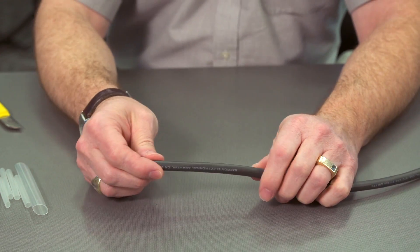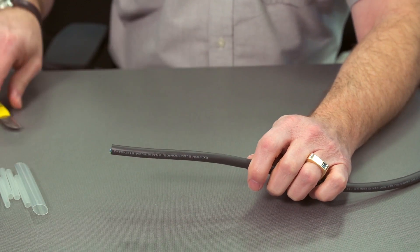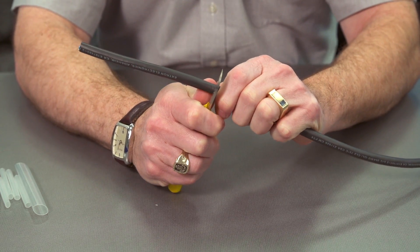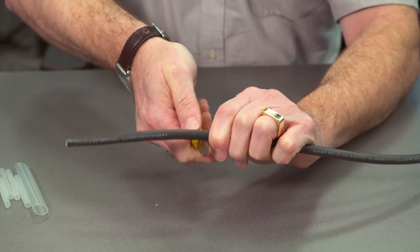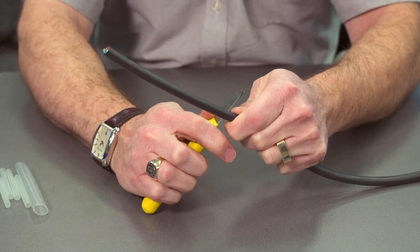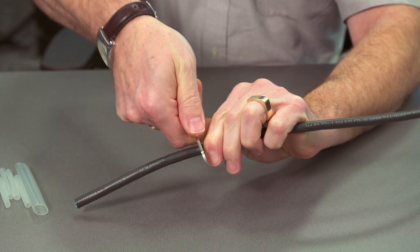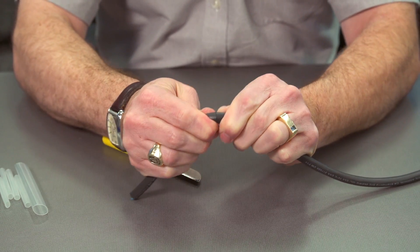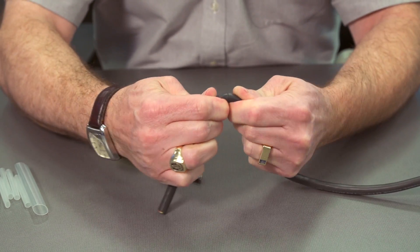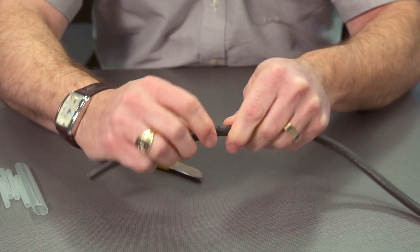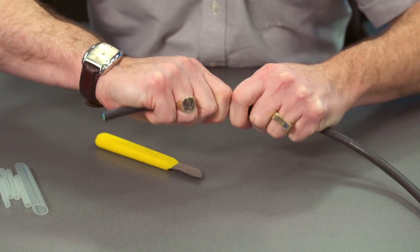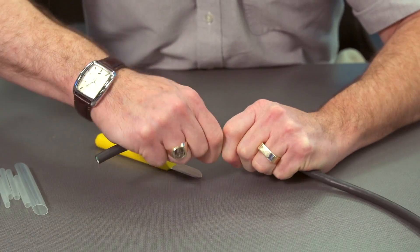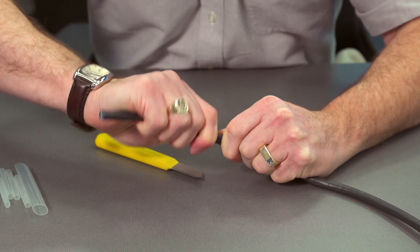First thing we need to do is strip back this jacket, and I like to use a knife for that and just score around the cable. Then we can pull back the jacket and it should start to split, and then we can work it off slowly.